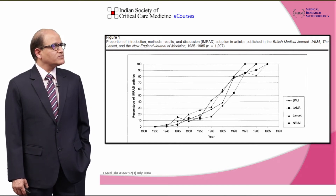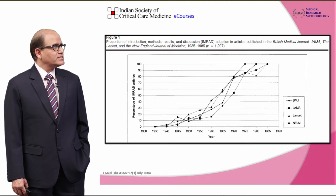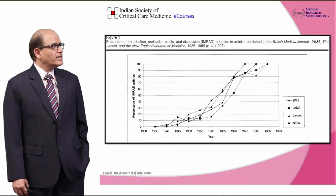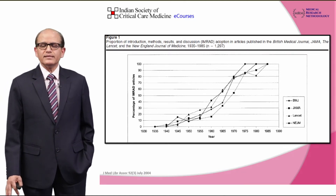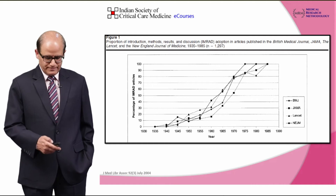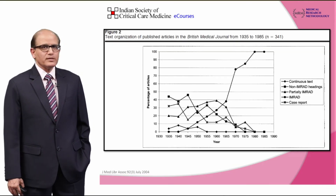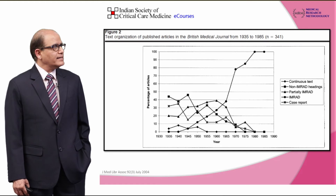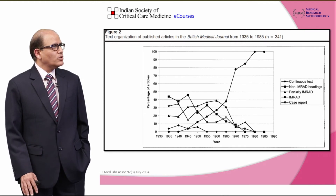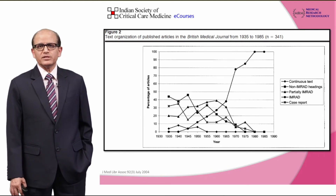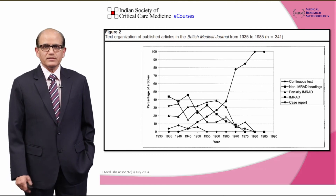Looking at data from four major journals, before the 1970s the IMRAD format was not being followed. Beyond 1985, everything is standardized in the IMRAD format. Looking at one particular journal — the British Medical Journal — again after 1985, most publications in this journal follow the IMRAD format.